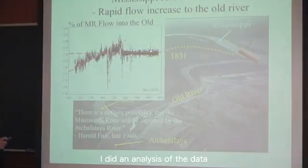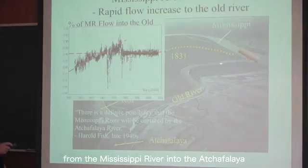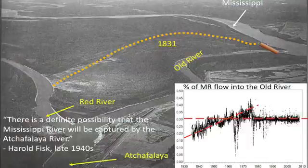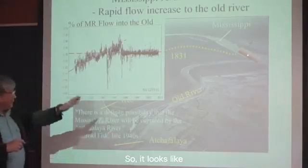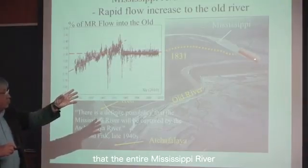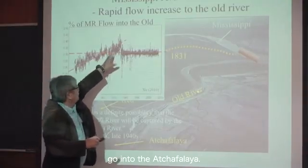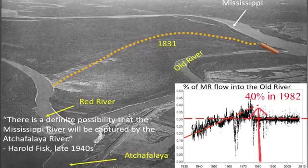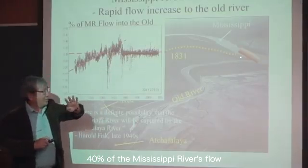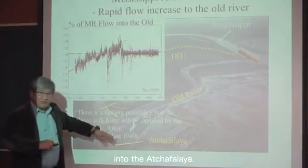I did an analysis of the data and compared the flow from the Mississippi River into the Atchafalaya. What we see is a constant increasing trend — already 40% of the Mississippi River's flow is going into the Atchafalaya.